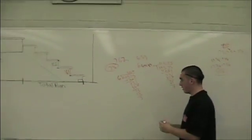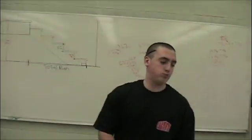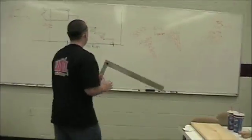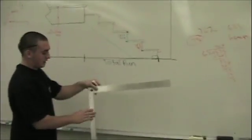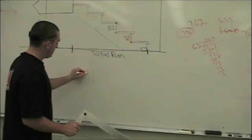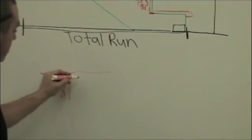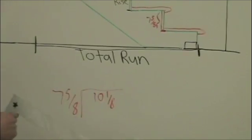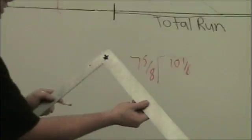If I take a framing square, which is this, I would hold 7 and 5/8 this way on this side. For my run, I have 10 and 1/8. So I'm going to hold 7 and 5/8 on this side and 10 and 1/8 on this side, and hold it on this wood and step it off five times.